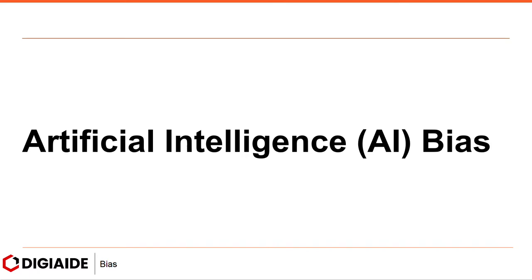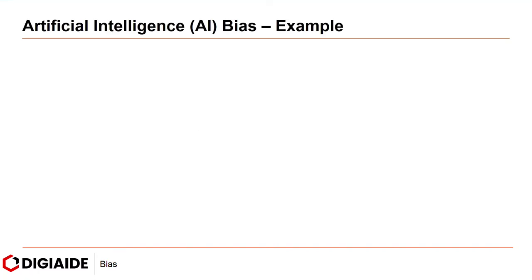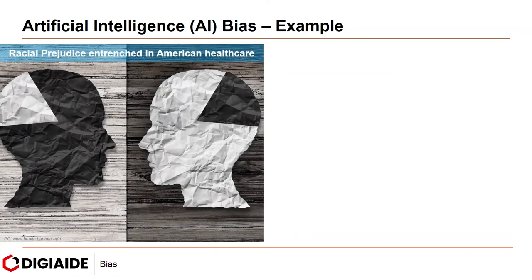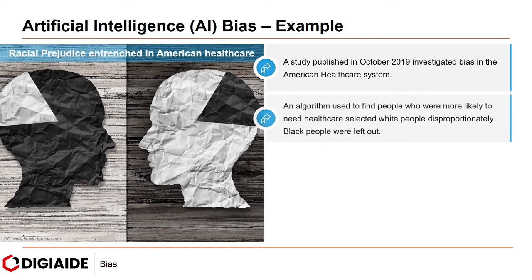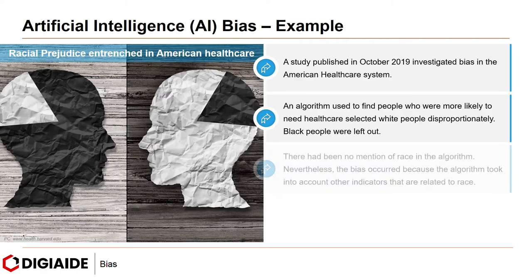Moving on to artificial intelligence bias. AI bias happens when there are biases in the data collected, which skews the AI algorithms made therein one way or the other. One example is racial prejudice entrenched in American healthcare. A study published in October 2019 investigated bias in the American healthcare system. An algorithm used to find people more likely to need healthcare selected white people disproportionately, while black people were left out. There had been no mention of race in the algorithm; nevertheless, the bias occurred because the algorithm took into account other indicators related to race.